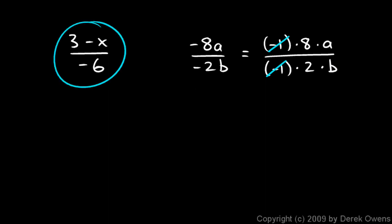That doesn't work over here. This is not a factor. That's an operator. That's 3 minus x. So, there's no factor of negative 1 in the numerator to cancel. And, the same thing here. I can't reduce the 3 and the 6 because the 3 is not a factor. You can only cancel the factors.